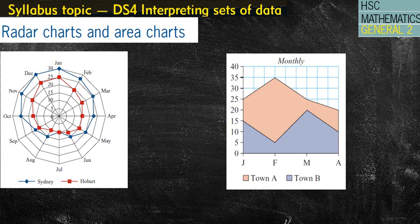Radar charts are often used to compare different types of data — things like temperature, water level, rainfall, those types of things. You can see in this example on the left hand side that we've got a time period going around clockwise. In this case it's months, and it can also be times like 8 o'clock, 9 o'clock, 10 o'clock, etc.